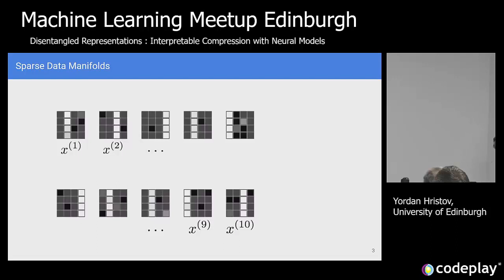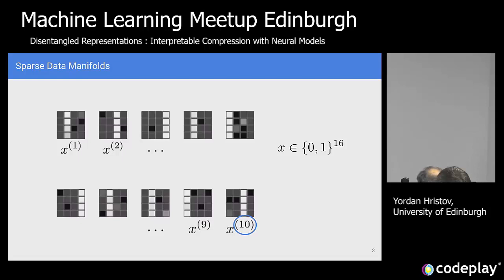There are a couple of observations we can make about these data points. The first one being that they're wrongly indexed — but if we ignore that, obviously there are 10 data points. Each data point is comprised of 16 squares, so it's 16-dimensional. Each square can be white or black, so it's essentially 16-dimensional binary data. But if you look closely, you might actually say that it's real-valued data, because you have a bunch of grey data points here and there.